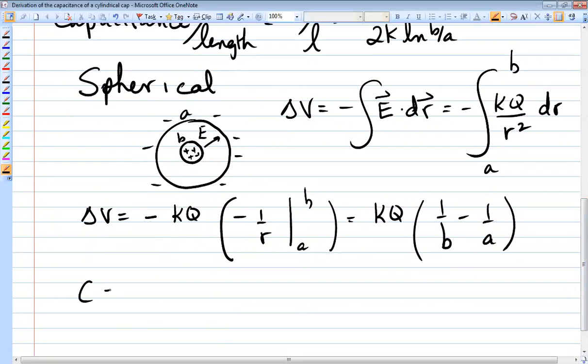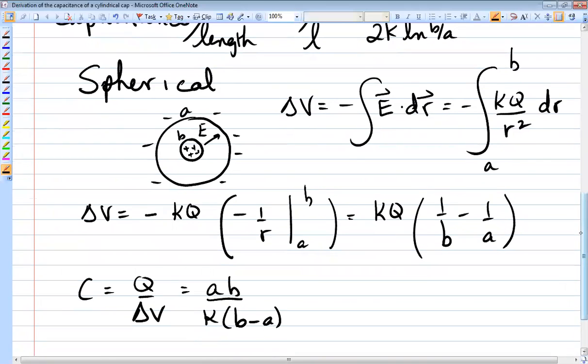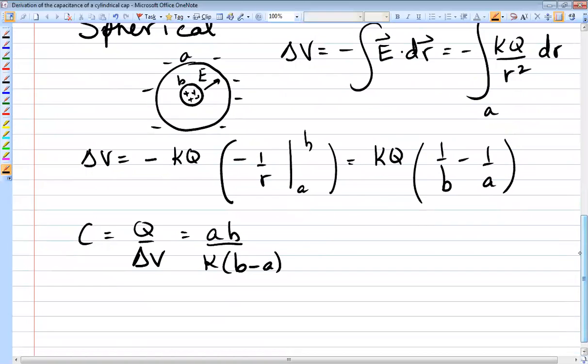And so now the capacitance becomes the charge divided by that potential difference between those two surfaces, which equals AB over k times B minus A. So we just took that to a common denominator and then flipped it. Once again, notice how this capacitance depends only on the geometry, just the radii of the inner and outer spheres.